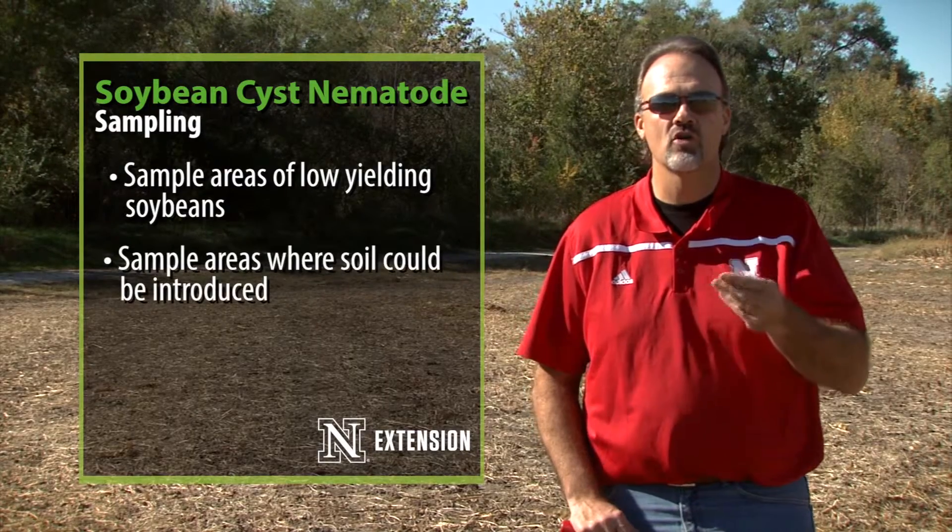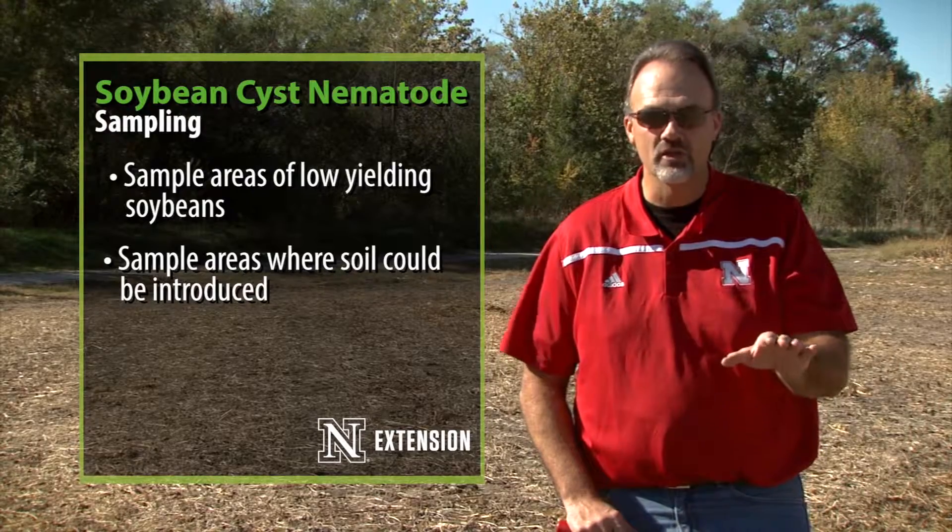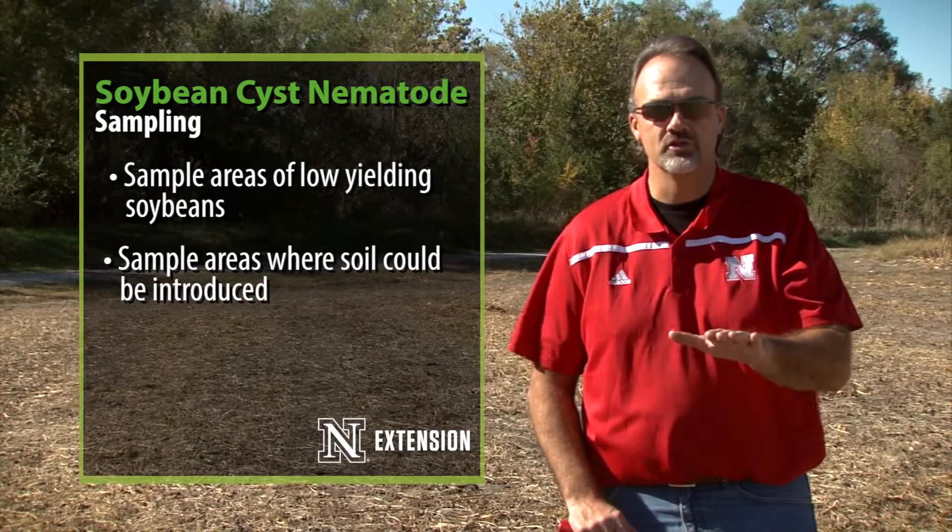When we're looking at sampling for soybean cyst nematode, we're going to try to hit those areas of low-yielding soybean. We'll also target, if we don't know if that field has cyst nematode, areas where soil could be introduced into the field — so that field entryway, areas along the fence where windblown soil erosion can accumulate, low areas in the field, pockets where those cysts from the nematode actually float down to.